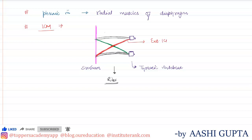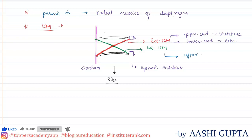The external intercostal muscle and the internal intercostal muscle differ in the attachment of their ends. The upper end of the external intercostal muscles is attached to the vertebrae, and the lower end is attached to the ribs. This is the exact opposite for internal intercostal muscles: the upper end is attached to the ribs and the lower end is attached to the vertebrae.